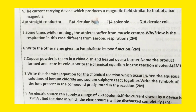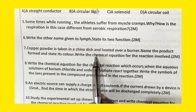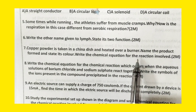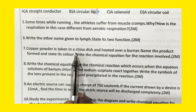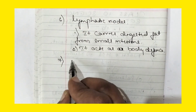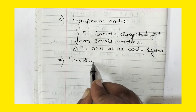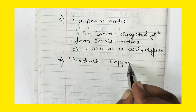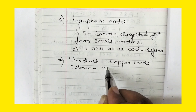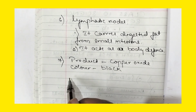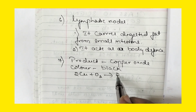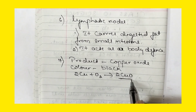Now question number 7: copper powder is taken in a china dish and heated over a burner. Name the product formed and state its colour, and write the chemical equation. The product formed is copper oxide. Copper oxide is black in colour. The chemical equation is: 2Cu + O₂ → 2CuO. This copper oxide is black in colour.